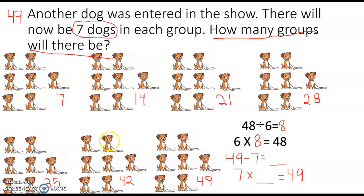So there are equal groups of 7. Let's see how many groups we made: 1, 2, 3, 4, 5, 6, 7 groups. So 49 divided by 7 equals 7, or 7 times 7 equals 49. You're going to be practicing making equal groups of 6s and 8s today, or making 6 or 8 equal groups.